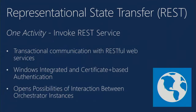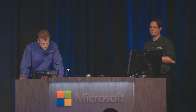The REST integration pack consists of one activity: Invoke REST Service. This allows us to interact with OData RESTful web services — which incidentally describes the Orchestrator web service itself. Imagine a globally distributed organization with Orchestrator instances around the globe. You could use the Invoke REST Service activity to invoke runbooks in remote Orchestrator instances around the world, triggering any sort of globally coordinated automation sequence.